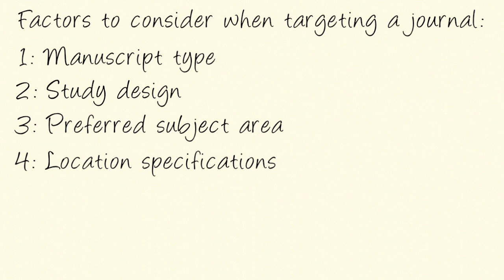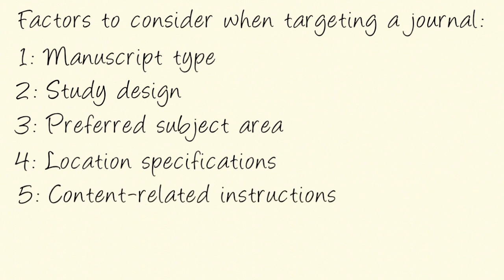Finally, we have the content-related instructions that may be supplied by the journal — specific advice on the statistics you need to use, the methods, the sample type, the sample size, and so on. This could vary from one journal to another. So these five factors — namely the manuscript type, the study design, the preferred subject area, the location, and the content-related instructions — are important to check.